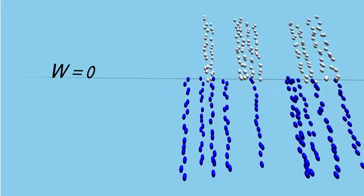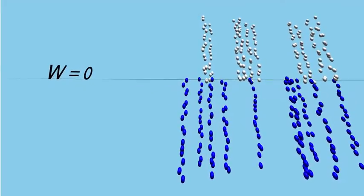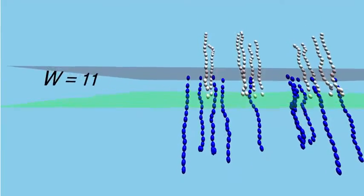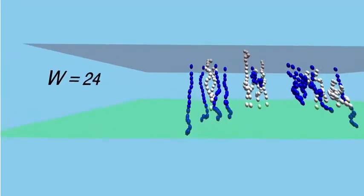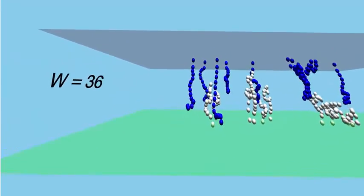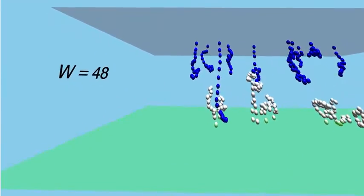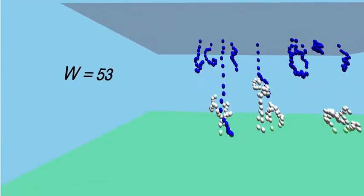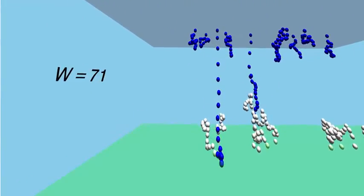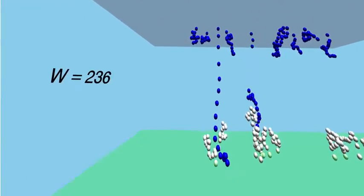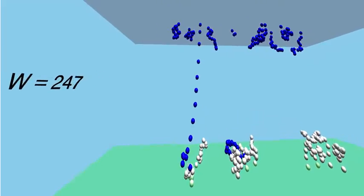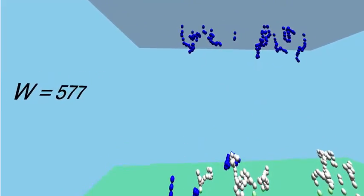If I pull the interface apart, these intermingled polymer chains mostly slide past each other and the work of adhesion is quite modest. You get the occasional tangle, and when that tangle breaks you get a big jump in the work of adhesion, but overall the work of adhesion is fairly modest.